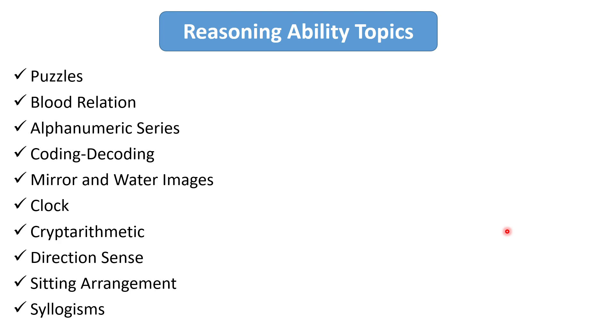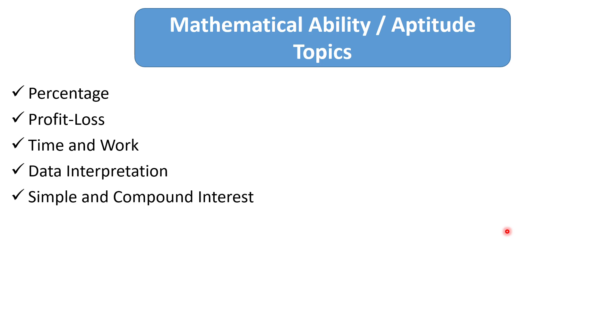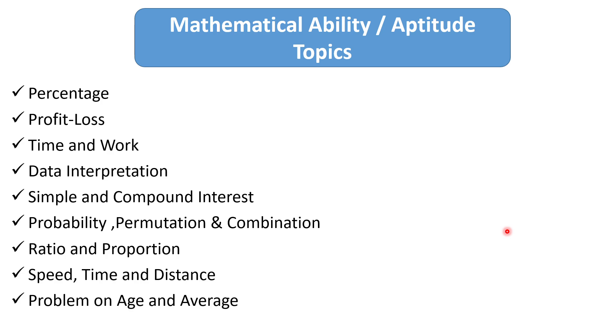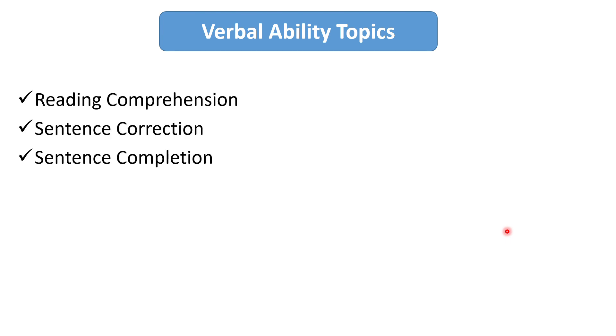Now we will see the important topics from the mathematical ability or aptitude. The topics are percentage, profit and loss, time and work, data interpretation, simple interest or compound interest, probability, permutation and combination, ratio and proportion, speed, time and distance, problem on age and average. And some important topics that you can prepare for the verbal ability test are reading comprehension, sentence correction, sentence completion, one word substitution, para jumbles, analogy, error correction and fill in the blank.